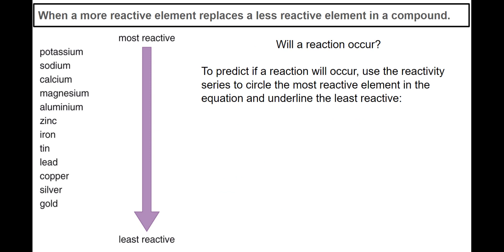Using this reactivity series to predict if a reaction will occur: we are going to use the reactivity series on the left, look at the metals involved, underline the least reactive, and circle the most reactive metal.